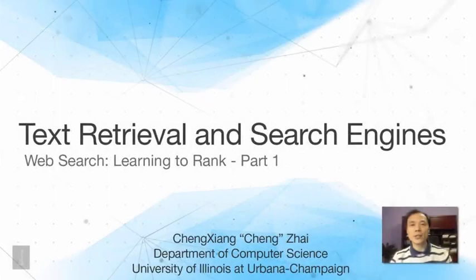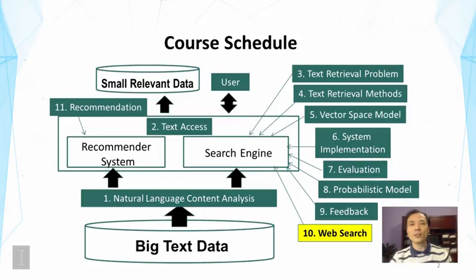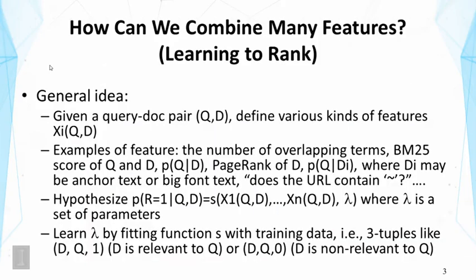This lecture is about learning to rank. We're going to continue talking about web search, and in particular we're going to talk about using machine learning to combine different features to improve the ranking function. The question we address in this lecture is how we can combine many features to generate a single ranking function.